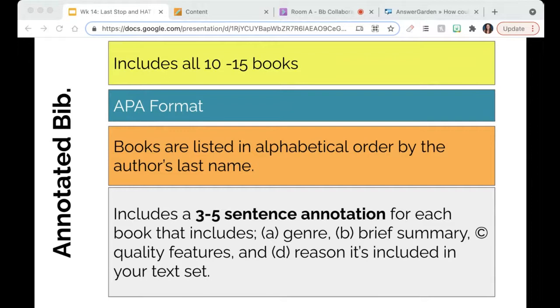When it comes to the annotation where you write a paragraph at the bottom, this is going to be longer than what you did for your genre assignment. You are going to include a three to five sentence annotation for each book that tells me the genre, a brief summary of the book, tells me what those quality features are and why it's included in your text set.